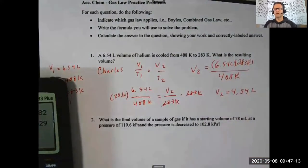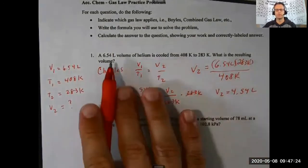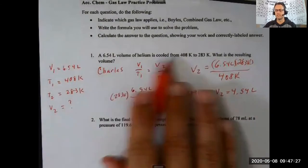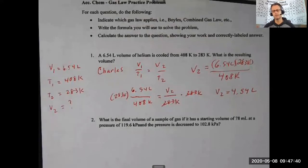A couple of things here: significant figures matter — each value in this problem has three sig figs, so our answer should also have three. Also, we can do a logic check because Charles's law says volume and temperature are directly proportional. The temperature went from 408 to 283 kelvin, so it decreased — we would expect the volume to also decrease.